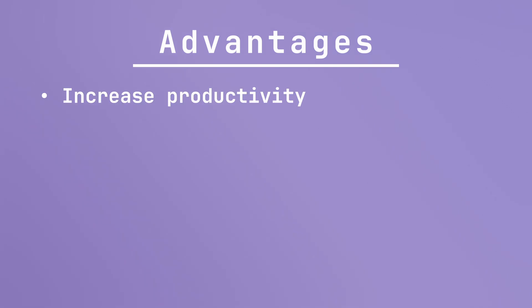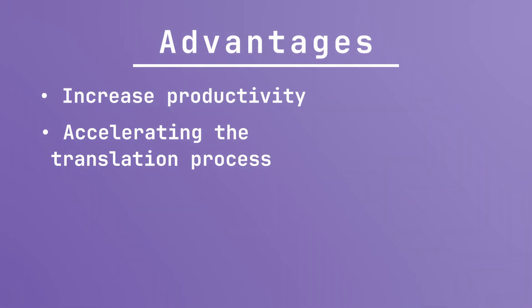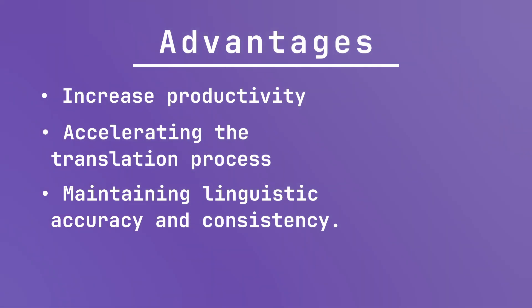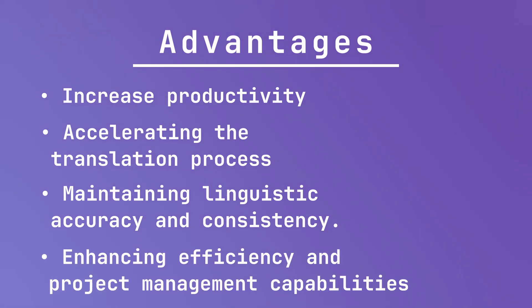CAT tools offer several major advantages to make your translation process easier. For example, CAT tools analyze your file and divide it into segments to increase productivity by saving you time. By leveraging translation memory and terminology management, you can accelerate the translation process while maintaining linguistic accuracy and consistency. Additionally, these tools enable collaboration with other translators and project managers, further enhancing efficiency and project management capabilities.